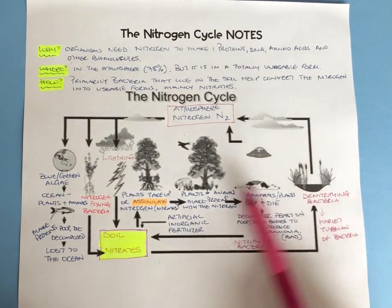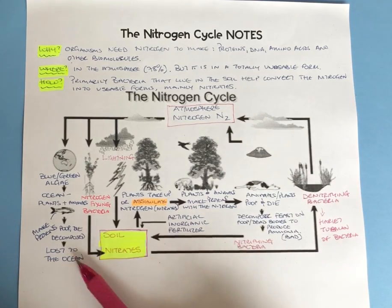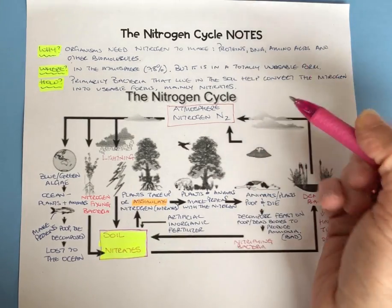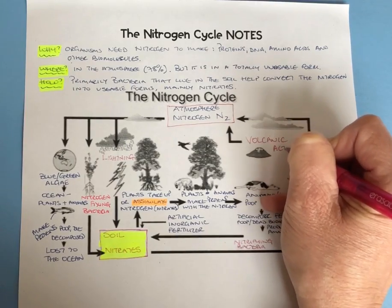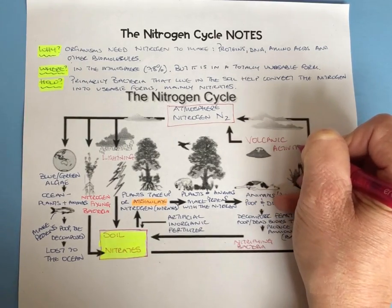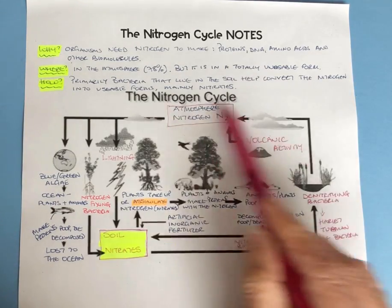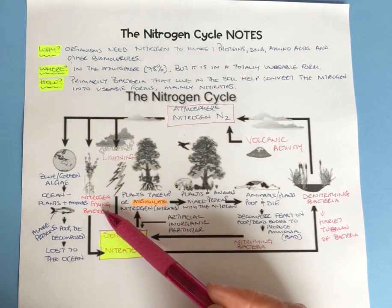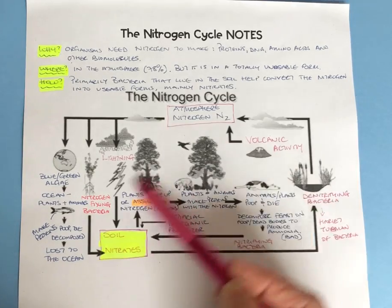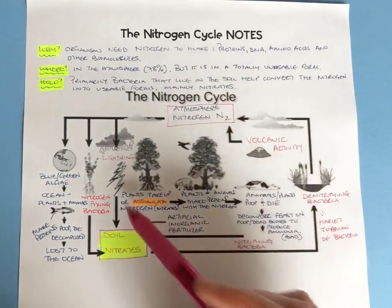There's one last way of releasing trapped nitrogen — through volcanic ash or volcanic activity. Volcanoes spew ash into the atmosphere, and then it goes back in. Not long after, lightning or nitrogen-fixing bacteria bring it back into the cycle, it gets stuck again, until the denitrifying bacteria free it. So this is our nitrogen cycle.